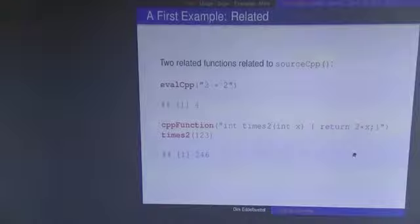So RCPP has two cousins or siblings. The simplest one is eval CPP, a simple evaluator of an expression, similar to eval or parse in R. So if you say two times two, you get four back. You've basically not only just wasted a few CPU cycles, but more importantly, demonstrated to yourself that your system is set up right. So if something's not working right, it's always good to just backtrack and try something simpler.